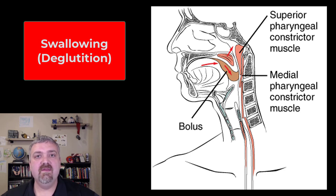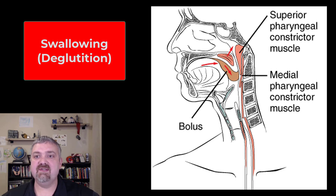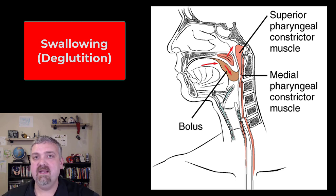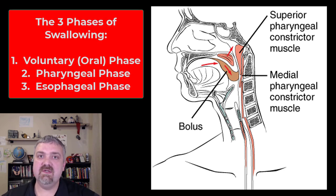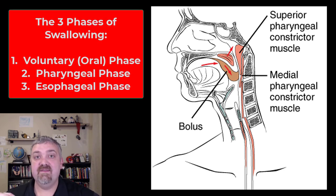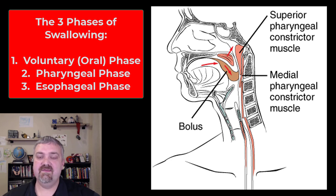It's going to involve the movement of the tongue, the movement of the pharynx, multiple structures, and muscle contractions. It's going to involve the medulla oblongata. So we're going to break swallowing down into three phases: the voluntary phase, which you'll also hear called the oral phase, the pharyngeal phase, and then the esophageal phase.